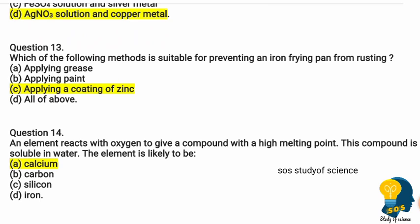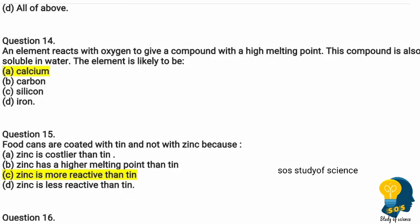Question thirteen: which method is suitable for preventing an iron frying pan from rusting? Option A applying grease, option B applying paint, option C applying a coat of zinc, option D all of the above. The correct answer is option C — applying a coat of zinc, which is also called galvanization.